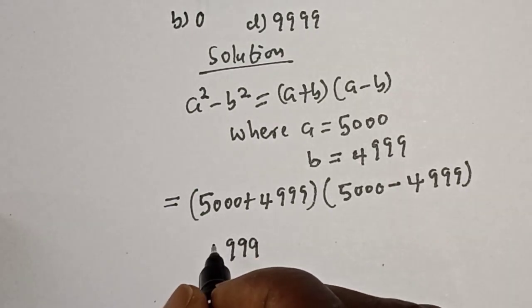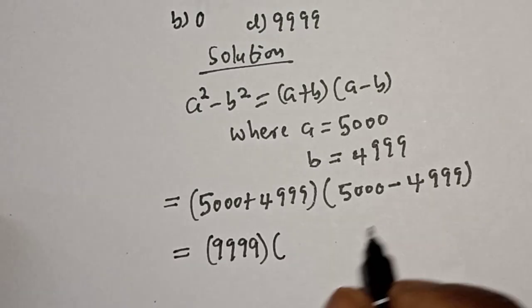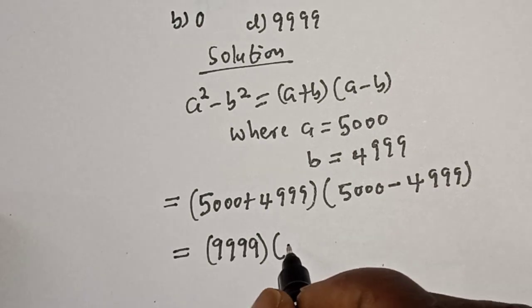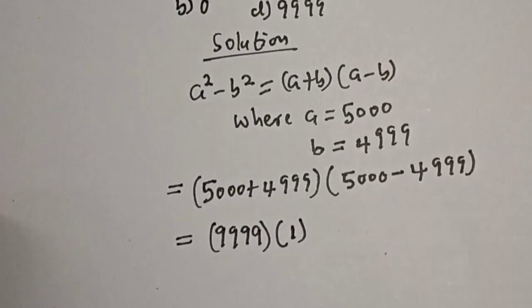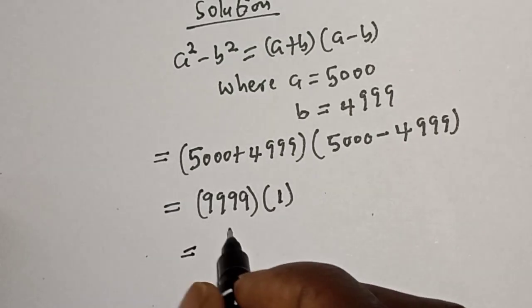5000 minus 4999, this is 1. And if you multiply 9999 by 1, this is equal to 9999. This is the final answer.